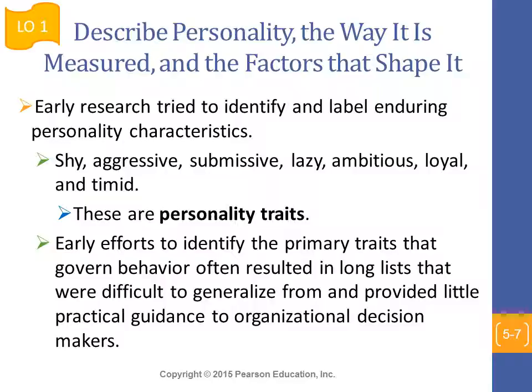Earlier researchers tried to identify and label different sorts of personality characteristics — those who are shy, aggressive, submissive, lazy, ambitious, and so on. The experts also mentioned that when these characteristics were visible in or present in one's behavior for a longer period of time, they become personality traits. There have been many efforts to identify the primary personality traits within a human being, but eventually there were too many and too long lists to have a generic framework.